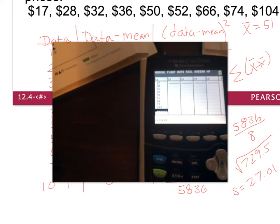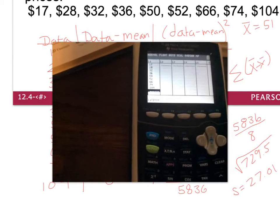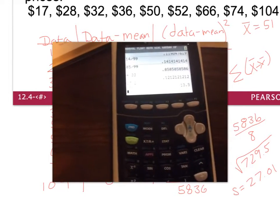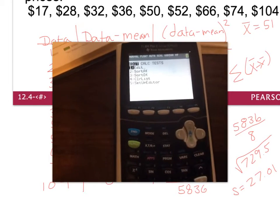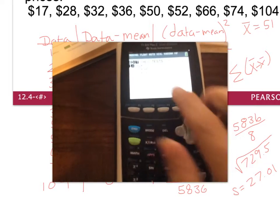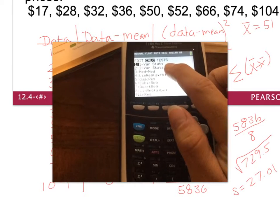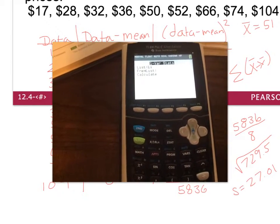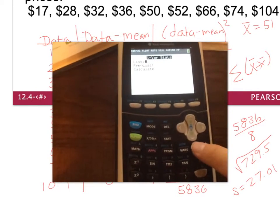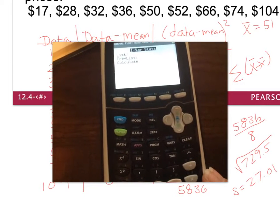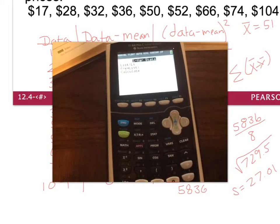To calculate, hit the STAT button again and go over to the CALC menu. Select option 1, which is one-variable statistics. Confirm that you want to use List 1 — you don't need to fill in anything for frequency — then hit Calculate.